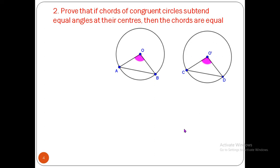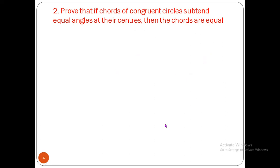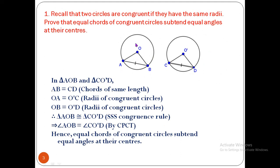Again two circles with centers O and O′ are congruent. The angles (shown in pink) are equal — that is given. We have to prove AB = CD. In the previous question AB = CD was given; now the angles are equal and we prove the chords equal.